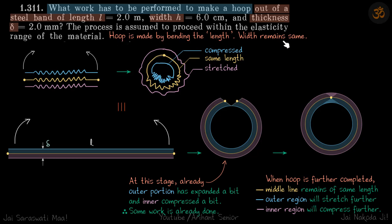So width remains the same. So it's going to be a cylinder with the circumference of the cylinder will be length and height of the cylinder will be width and thickness of that cylindrical shell that will be same as delta.